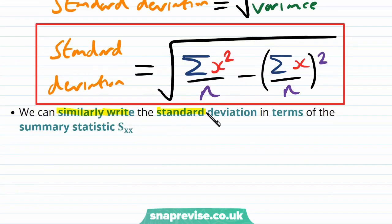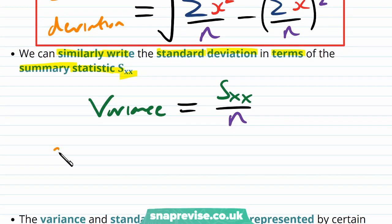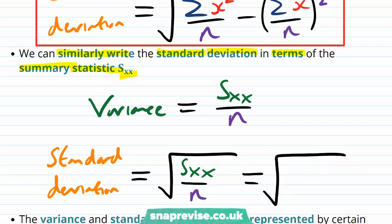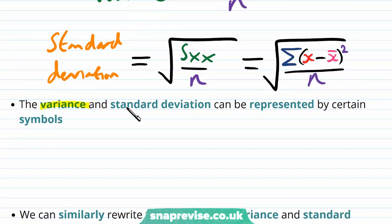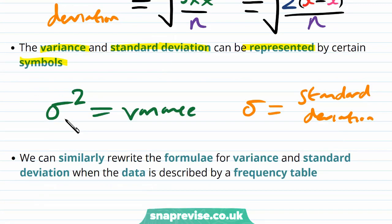We can similarly write the standard deviation in terms of the summary statistic Sxx. Because the variance equals Sxx over n, the standard deviation sigma is the square root of Sxx over n, which is also the square root of the sum of (X minus X-bar) squared over n. We write sigma squared for the variance and sigma for the standard deviation, since they are related by a square root.